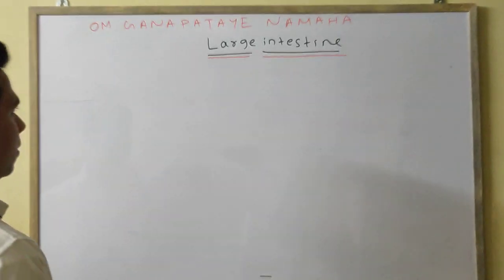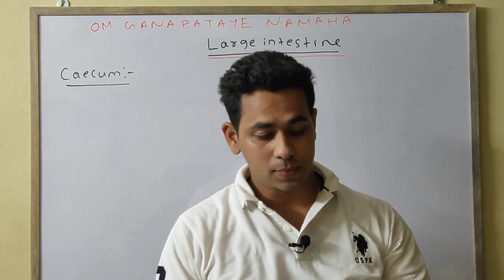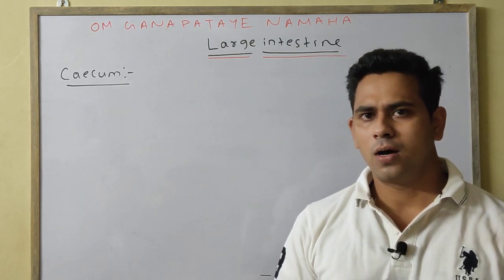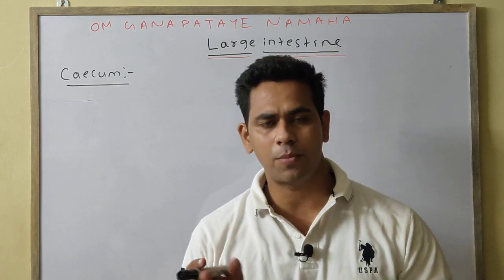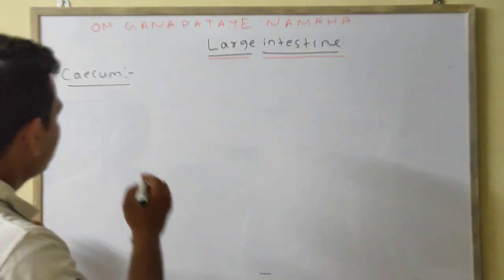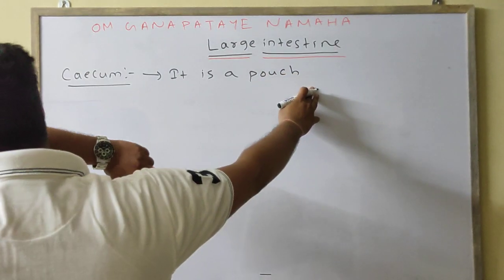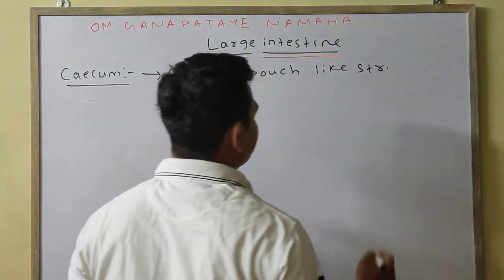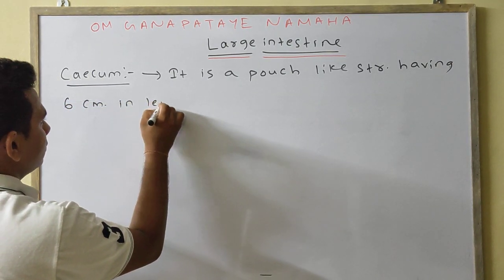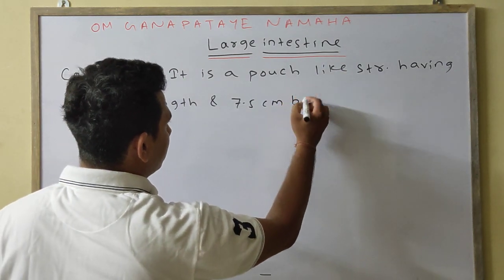First, we will discuss the caecum. The length of the caecum is around 6 cm and the breadth is around 7.5 cm. It is a pouch-like structure having 6 cm in length and 7.5 cm in width.